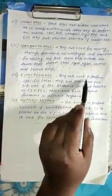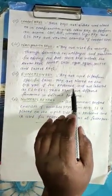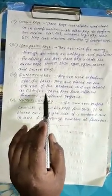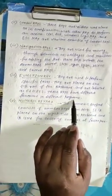Function keys - they are used to perform specific tasks. They are placed on the top row of the keyboard and are labeled as F1 to F12. These keys have different functions in different programs.